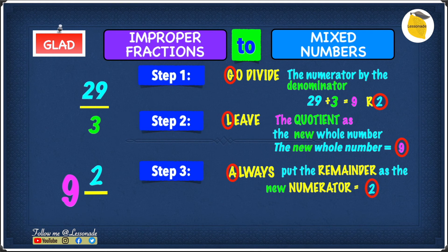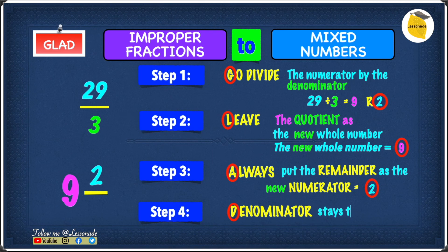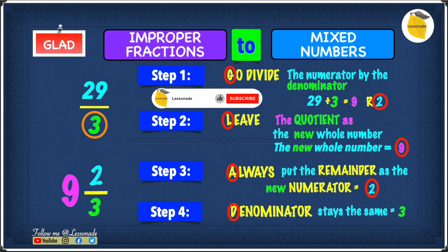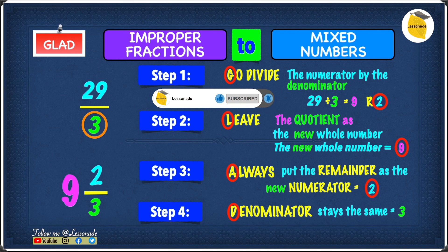Let's do step 4 to find the denominator. Step 4 is D, and D is denominator stays the same. So in 29 over 3, 3 is the denominator. So that means in our answer, 3 will also be the denominator. So therefore, 29 over 3 converted into a mixed number is 9 and 2 over 3.